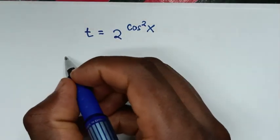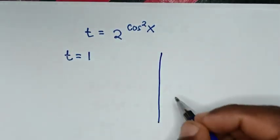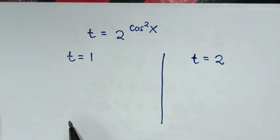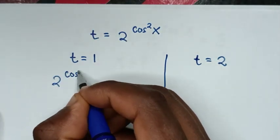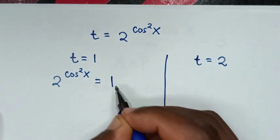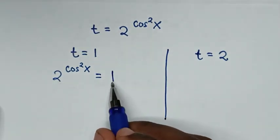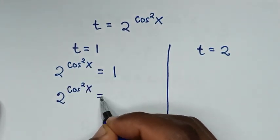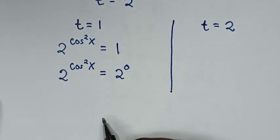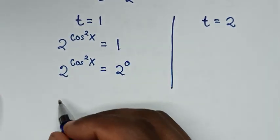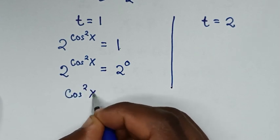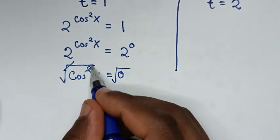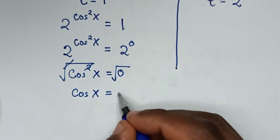Substituting t = 1: 2^(cos²x) = 1. To have the same base of 2, we write 1 as 2^0. So 2^(cos²x) = 2^0, and since the bases are the same, we compare powers: cos²x = 0. Applying square root to both sides gives cos x = 0.